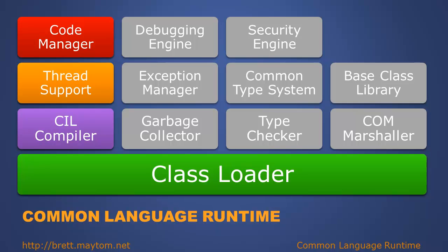When .NET languages are compiled, the assembly includes metadata which describes all the classes, methods, fields, and properties within those classes. When an application is loaded, classes are loaded and the metadata within these classes is also loaded. This metadata is then used by other CLR components such as the Type Checker or Security Engine.